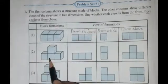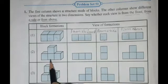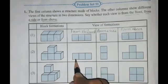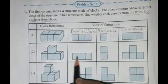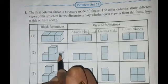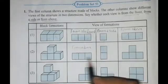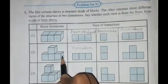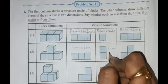Moving to the second block formation, the first view shows 1, 2 and 3 blocks. We can see these 3 blocks from above, so we write 'from above.' The next view shows 2 blocks seen from the side, so we write 'from a side.' The third view shows 1, 2, 3 and 4 blocks visible from the front, so we write 'from the front.'